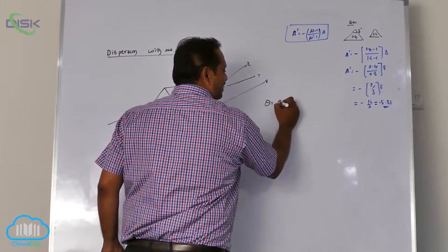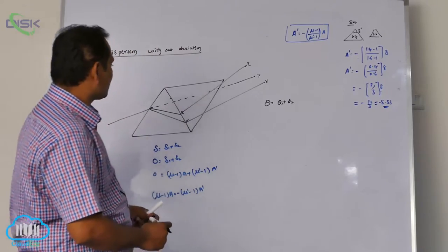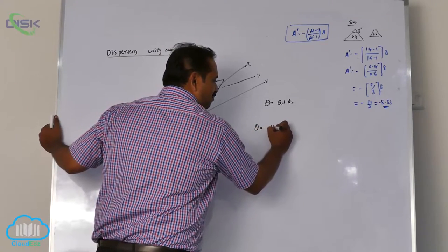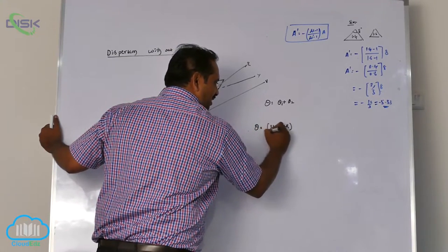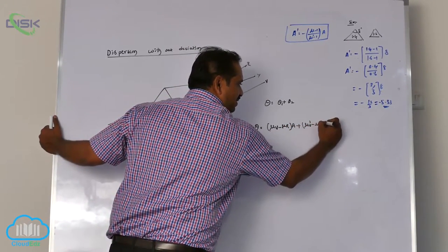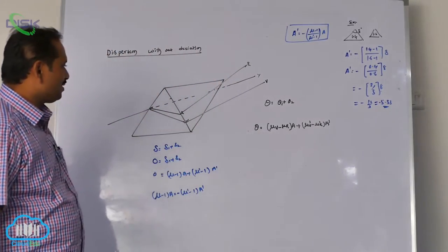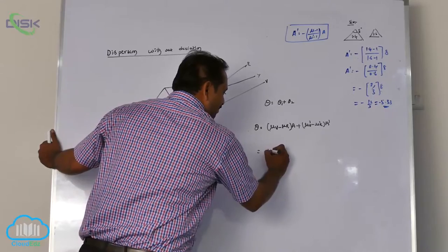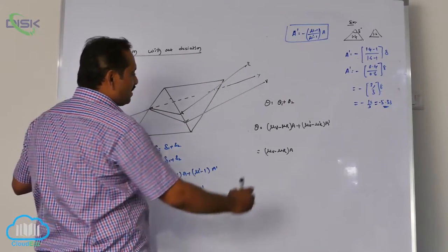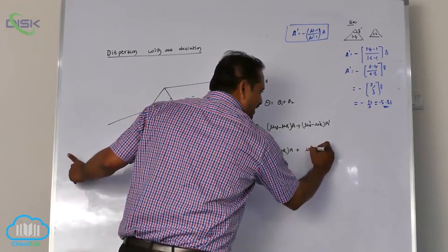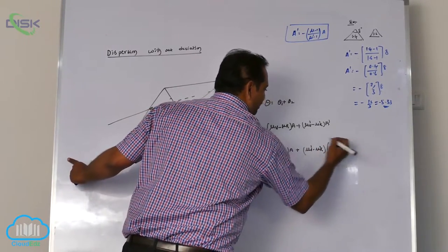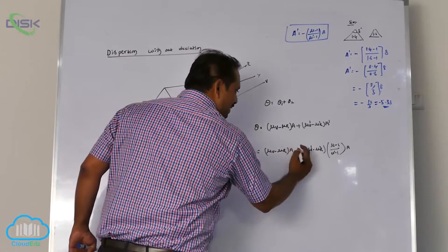Total dispersion theta equals theta one plus theta two. The formula expands to: theta equals (mu_V minus mu_R) times A plus (mu_V dash minus mu_R dash) times A dash. Now substituting the expression for A dash, which is minus (mu minus 1) divided by (mu dash minus 1) times A, the plus becomes minus.